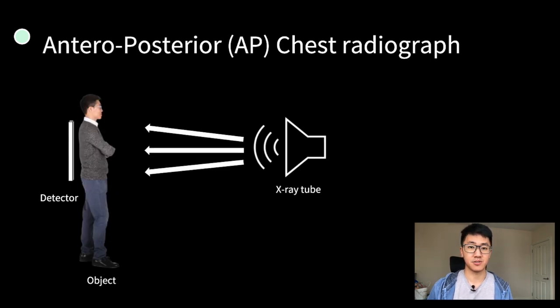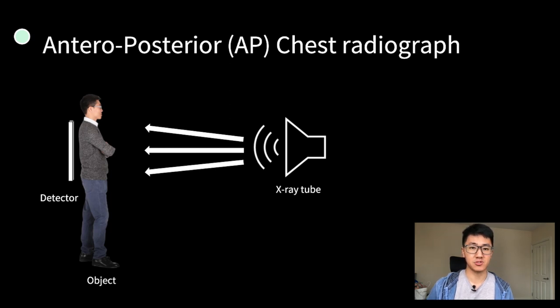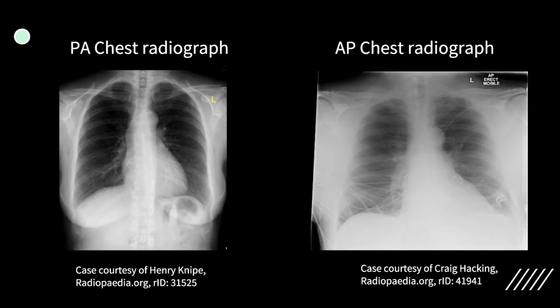For AP chest radiographs, the x-ray tube is a lot closer to the patient and they're facing it. This is typically used for patients who are more unwell or less mobile. The difference here is because the x-ray tube is closer, the x-rays are more diverging, which means that anything near the front of the chest, such as the heart, will appear larger. So here we can see some of the key differences between PA and AP projections. The main difference being that the heart appears larger on the AP chest radiograph, and that's important so that you don't mistake the patient for having heart failure.